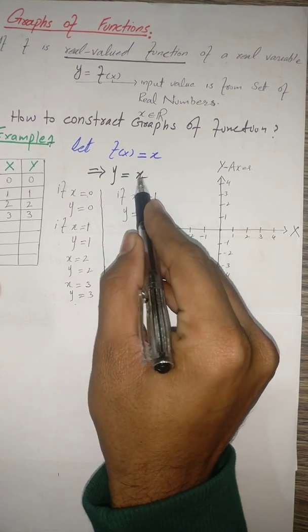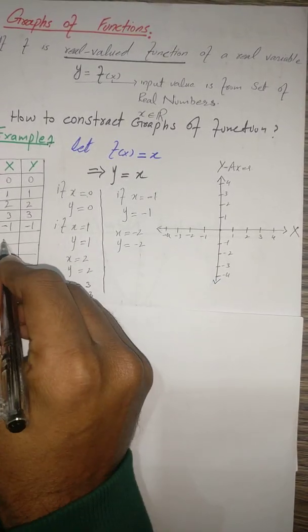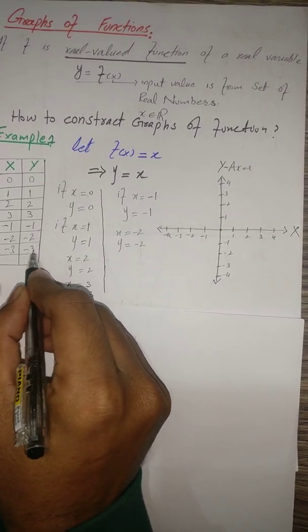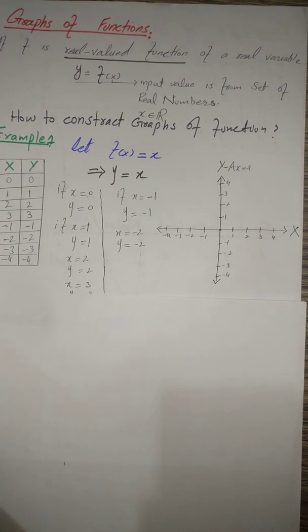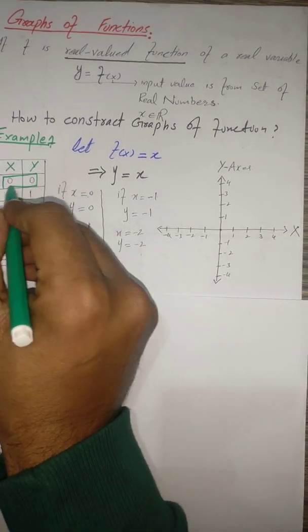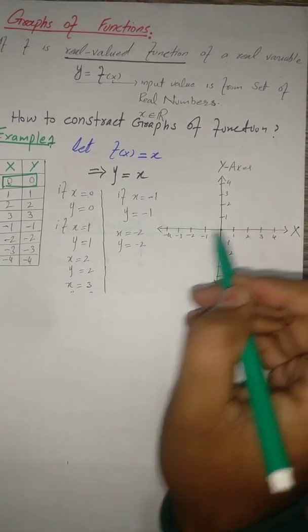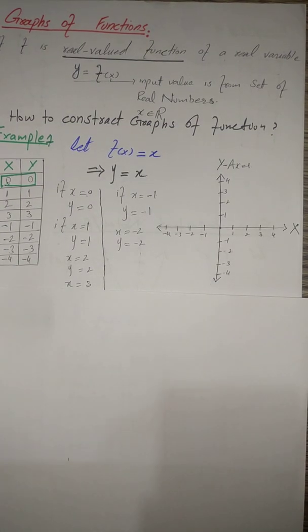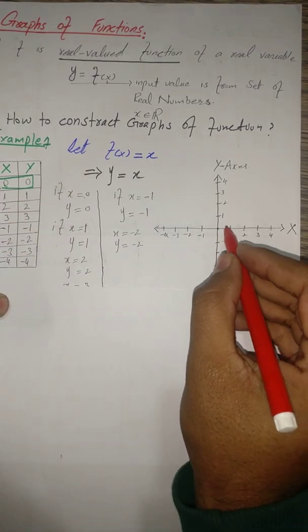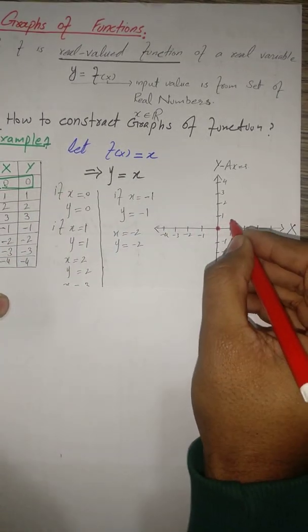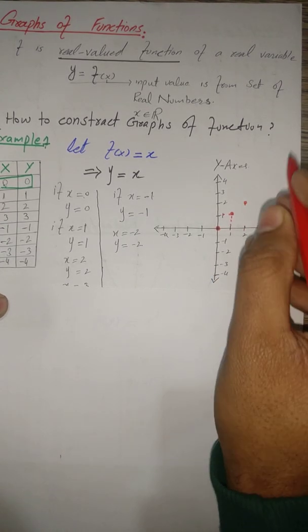When x = -1, y = -1. When x = -2, y = -2. When x = -3, y = -3. When x = -4, y = -4. These are the ordered pairs. Now we construct the graph on the XY plane. When x = 0, y = 0. When x = 1, y = 1. When x = 2, y = 2. When x = 3, y = 3.